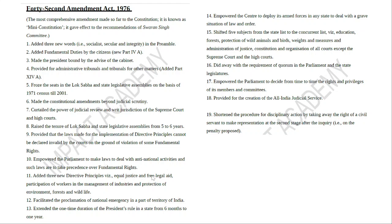The 42nd Amendment Act also added three new Directive Principles — equal justice and free legal aid (Article 39A), participation of workers in management (Article 43A), and protection of environment and forests (around Article 48A). It also provided for the proclamation of national emergency in a specific territory of India rather than the whole country, and allowed the Centre to deploy armed forces to deal with grave situations of law and order. All these were based on the recommendations of the Swaran Singh Committee, and the committee also added fundamental duties under Part 4A.